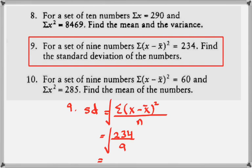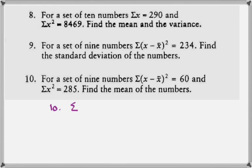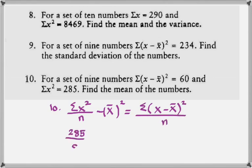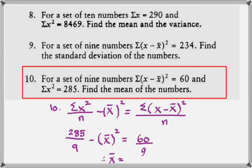From this type of summarized data you cannot find the mean — if they wanted you to find the mean, some other piece of information would be given. Question number 10: for a set of 9 numbers, Σ(x − x̄)² = 60 and Σx² = 285. Both formulas for standard deviation will be used. The first formula is √(Σx²/n − x̄²) and the other is √(Σ(x − x̄)²/n). Since both equal standard deviation, equate them, square both sides to remove the square root, and make the unknown the subject. Since x̄ is unknown and that is what they ask for, you can find x̄.